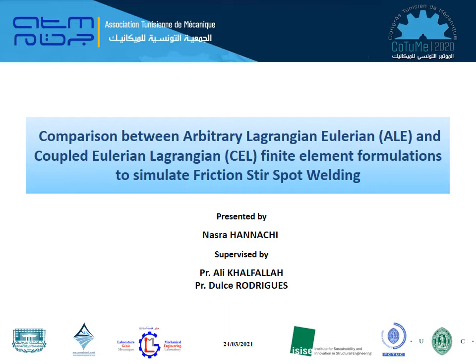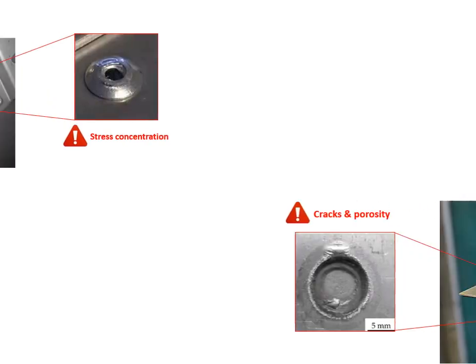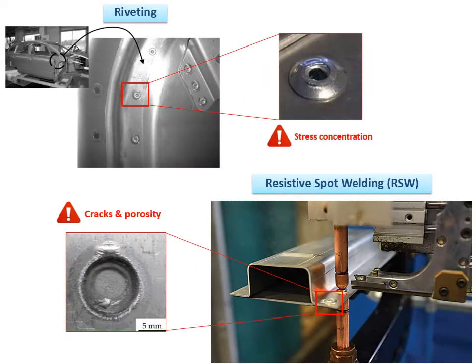Let's begin with the context of this study. For joining structures, industrials use several techniques, namely riveting and resistive spot welding. However, those methods present some issues that may affect the quality of the joint, like stress concentration and cracks. To overcome these problems, the new technique called friction stir spot welding was invented, and this is the topic of our research work.